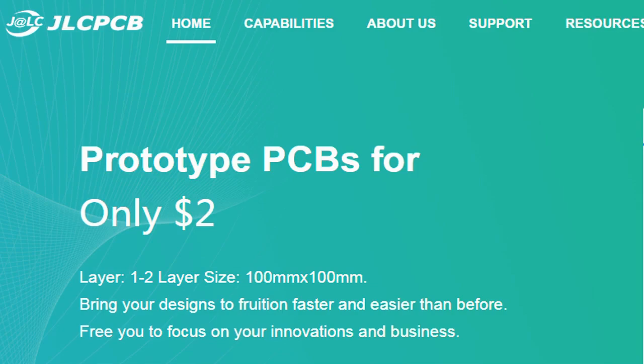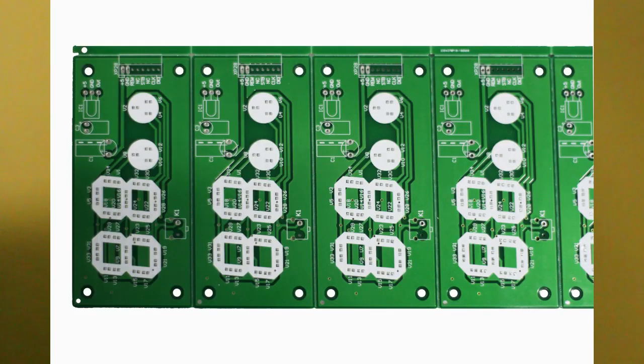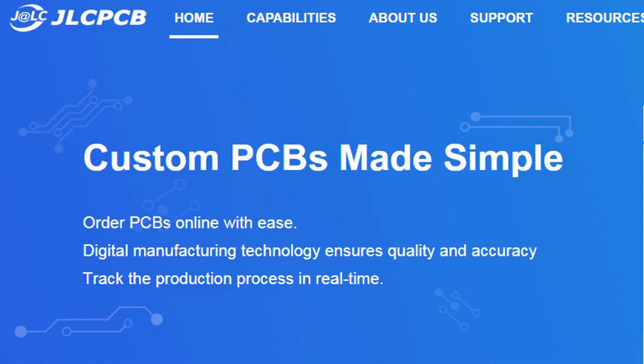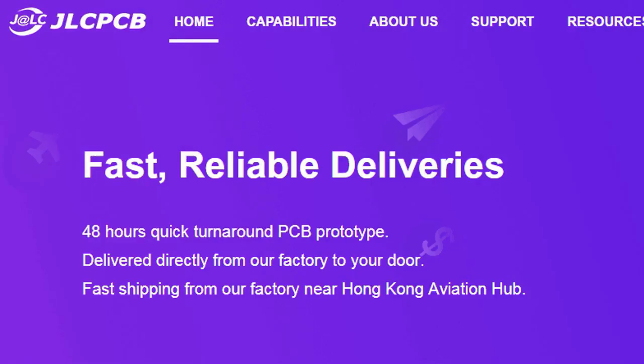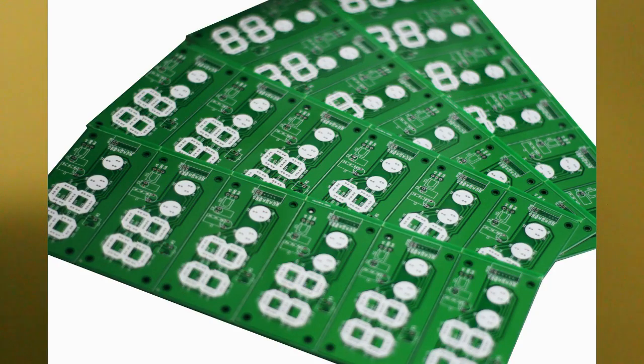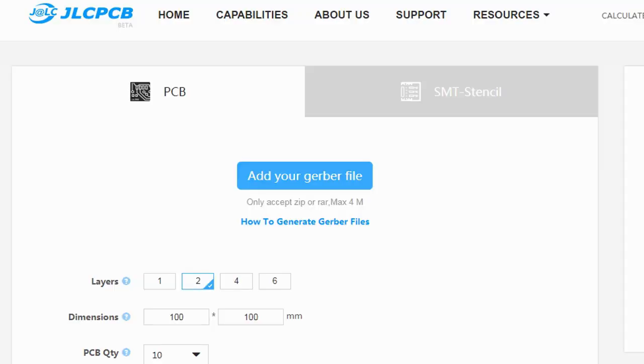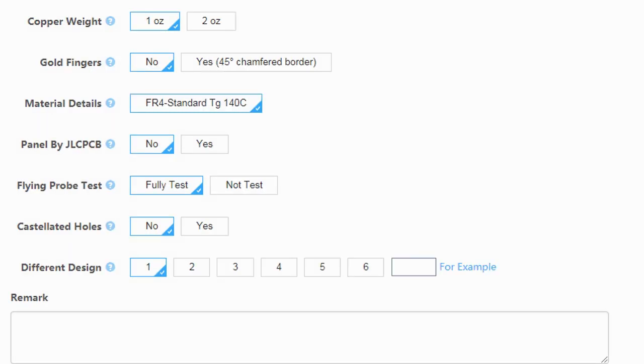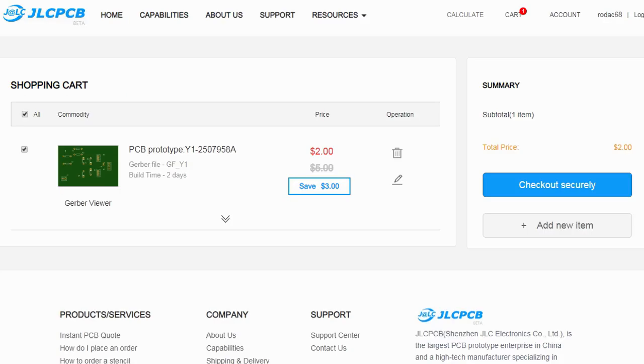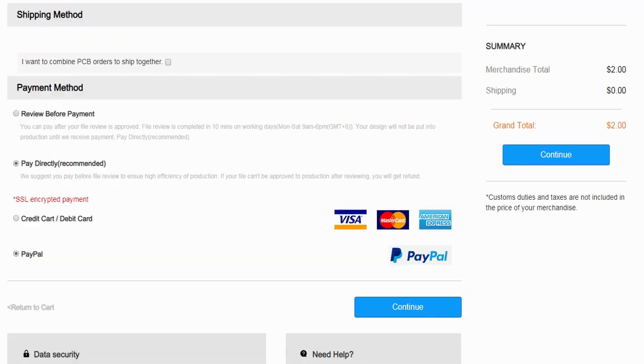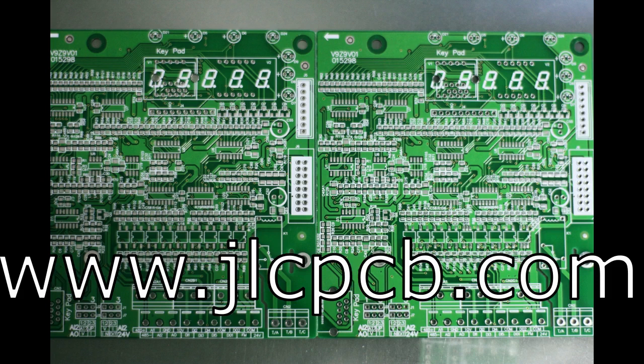This video is sponsored by JLCPCB. JLCPCB is a company that makes excellent quality PCBs at an unbeatable price. You can order boards online in minutes. After registration, upload your Gerber files, select the PCB properties, select the payment method and place your order. Best price and quality for all your PCB needs.